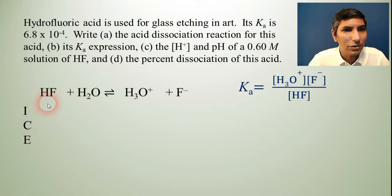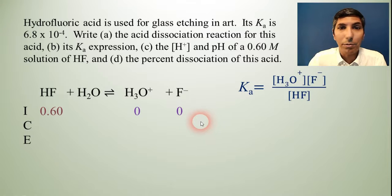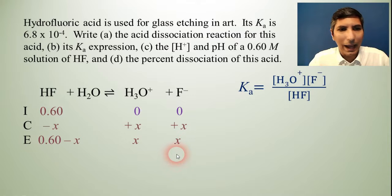For the initial concentration of HF, the problem tells us it's 0.60 moles per liter. We're not going to worry about water since it's a liquid. The other products are going to be zero. Hydronium and fluoride are zero. That's all that the problem gives us except for the Ka value. So the change is going to be minus X and hydronium and fluoride will be plus X for those two because this is a one to one to one ratio. So the equilibrium values will be 0.60 minus X, X, and X.